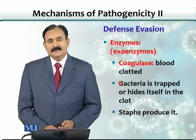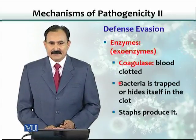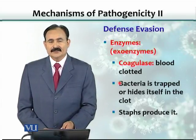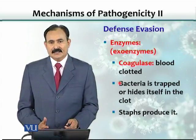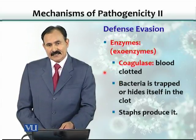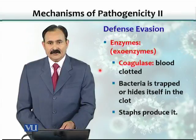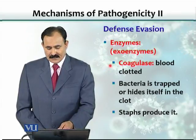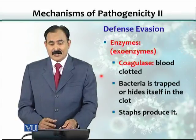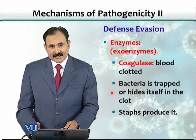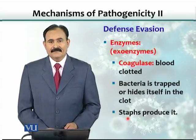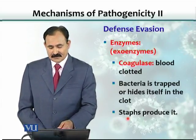Other organisms have the ability to synthesize enzymes that enable them to stay or set up infection in the body. One example is coagulase — this enzyme, secreted by the organism, causes the blood to clot, and the organism remains hidden in the clot and replicates there. An example is Staphylococcus aureus, which can produce coagulase.